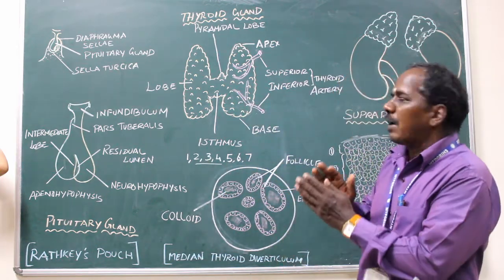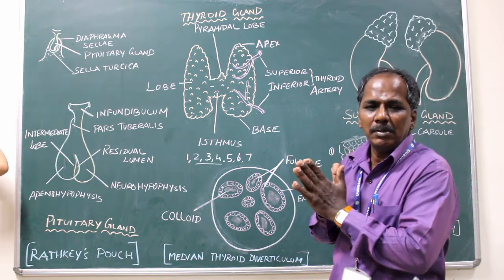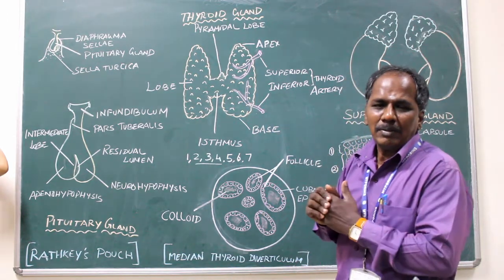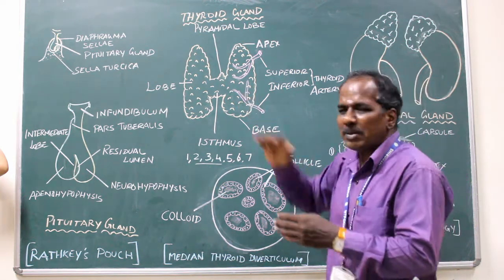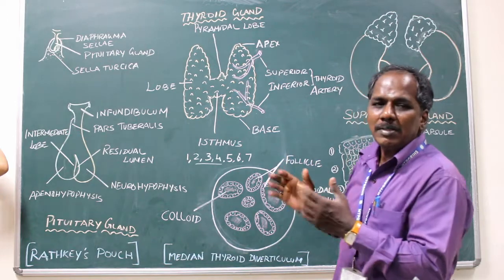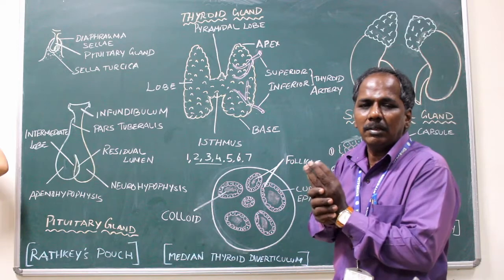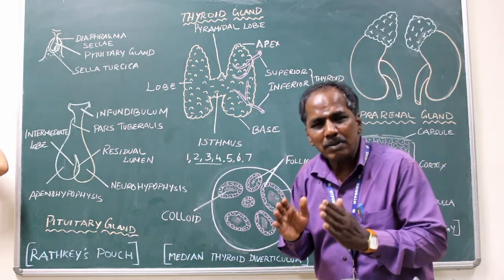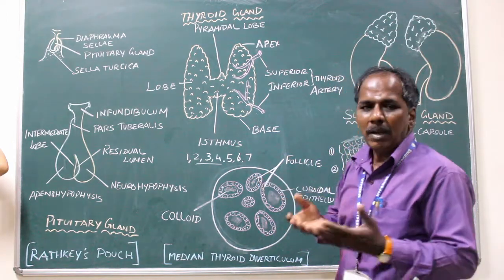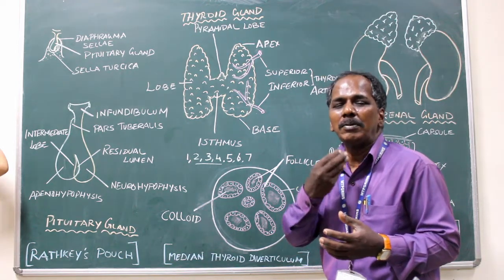The thyroid gland is covered by a fascia, that is the capsule. It has two capsules: one is the true capsule which is adherent to the surface of the gland, and the other is the pretracheal fascia which encloses the gland. This pretracheal fascia is responsible for the movement of the gland during deglutition, as seen in a condition called goiter, where you can observe the enlarged gland moving.